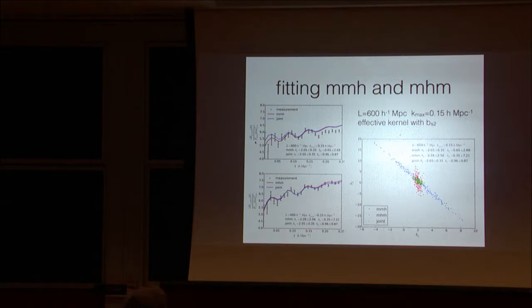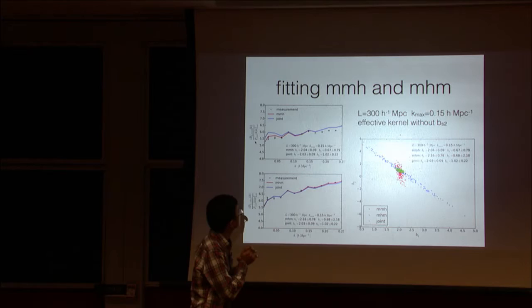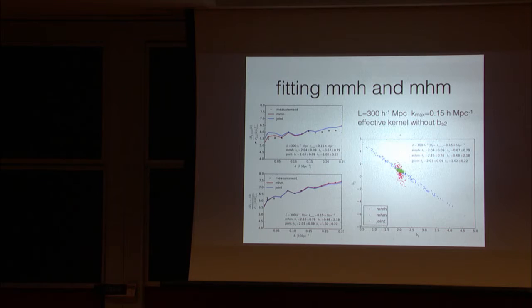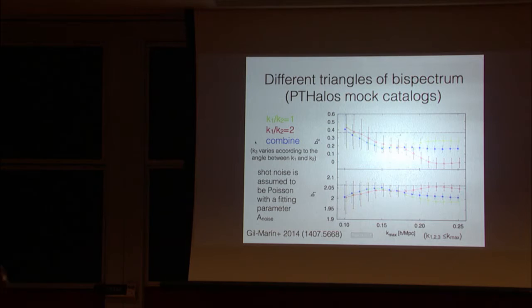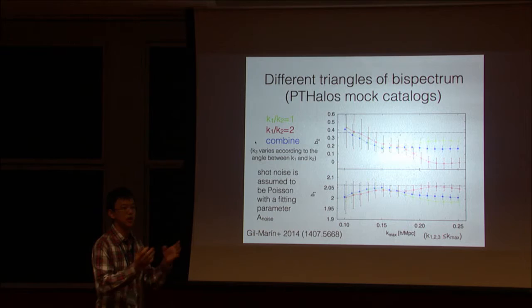So similar result you can see is from, so this is just for smaller size of the sub volume, 300 megaparsec. And the error, statistical error becomes smaller. And this one is without non-local bias. And if you put it back, it gets better fit. And for here, I assume the non-local bias is local in Lagrangian space. So you just fit B1.